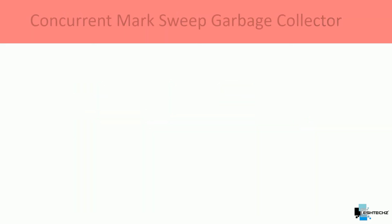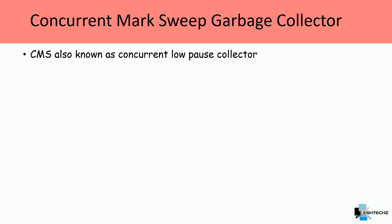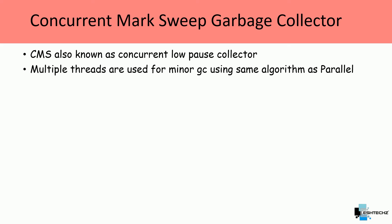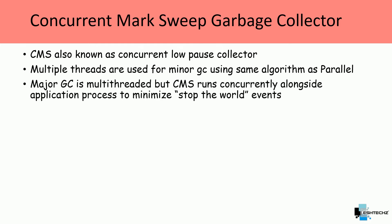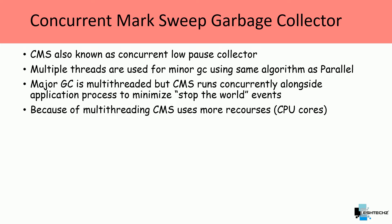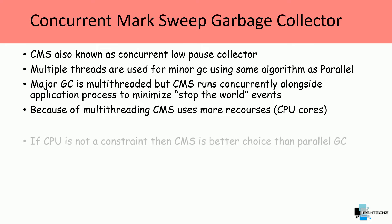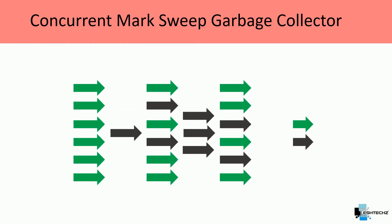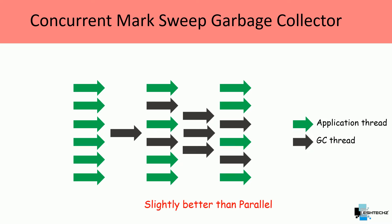The next one is the Concurrent Mark Sweep garbage collector. CMS is also known as the concurrent low-pause collector. Multiple threads are used for minor GC using the same algorithm as Parallel. Major GC is multi-threaded but CMS runs concurrently alongside the application process to minimize stop-the-world events. Because of multi-threading, CMS uses more resources — more CPU cores. If CPU is not a constraint, then CMS is a better choice than Parallel GC, and its performance is slightly better than Parallel.